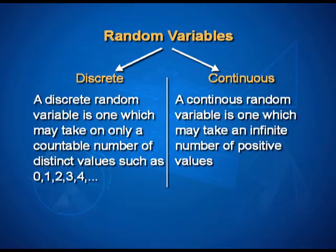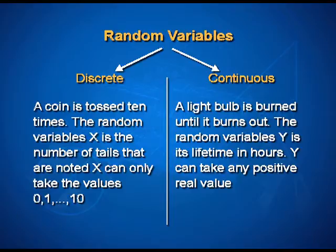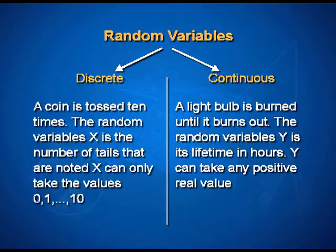There is a difference in the two examples, which decides the classification of a random variable as a discrete random variable, where the values that random variable takes are countable — 0, 1, 2, 3, 4, and so on. Whereas a continuous random variable is the one which takes an infinite number of possible values. So our first example, where a coin is tossed 10 times, the random variable x representing number of tails takes values 0 to 10, so it is a discrete random variable. Whereas y representing lifetime in hours can take any positive real value and that is continuous.